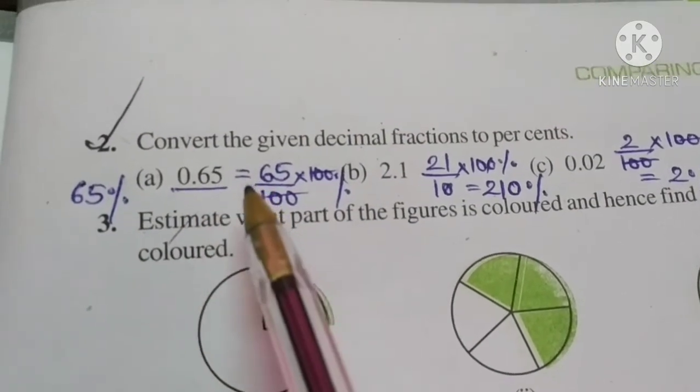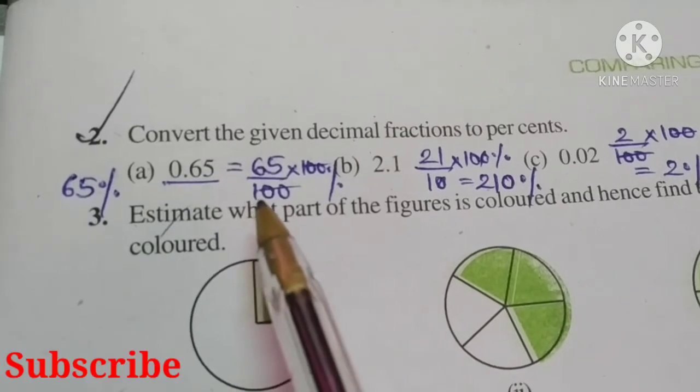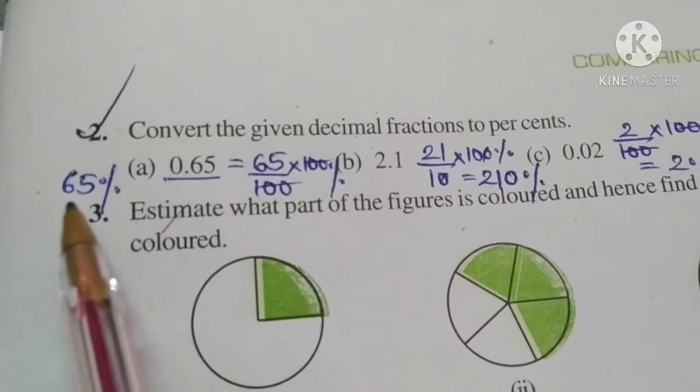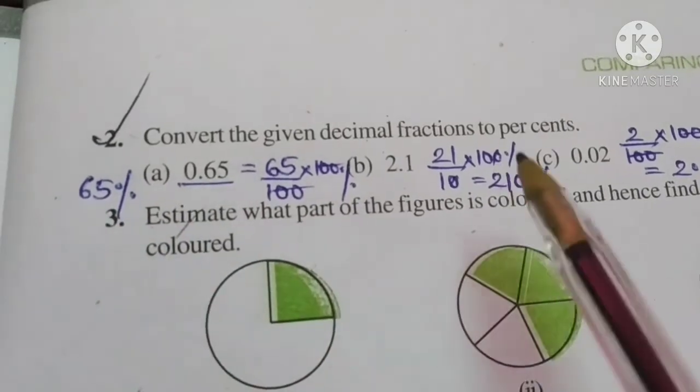Part (a): 0.65. We can write it as 65/100 times 100 percent, so 100 cancels, we get 65 percent.